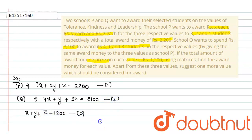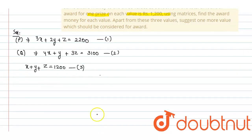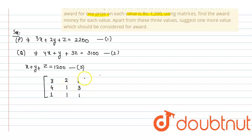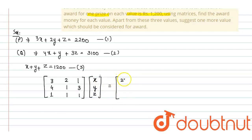Now we will solve these equations by matrix method. From the first equation, the coefficient matrix A is: row 1 is 3, 2, 1; row 2 is 4, 1, 3; row 3 is 1, 1, 1. And the variable matrix is x, y, z, and the values — prize money — are 2200, 3100 and 1200.